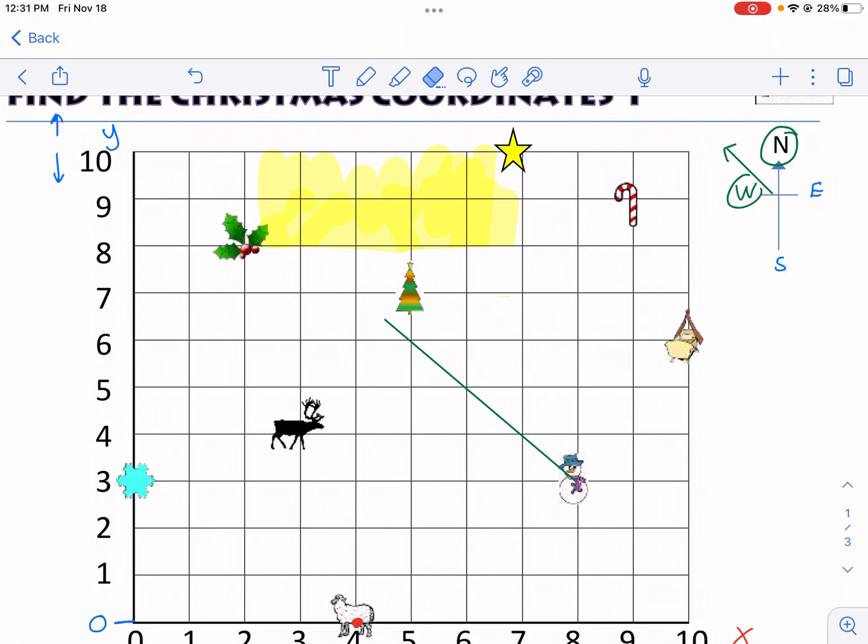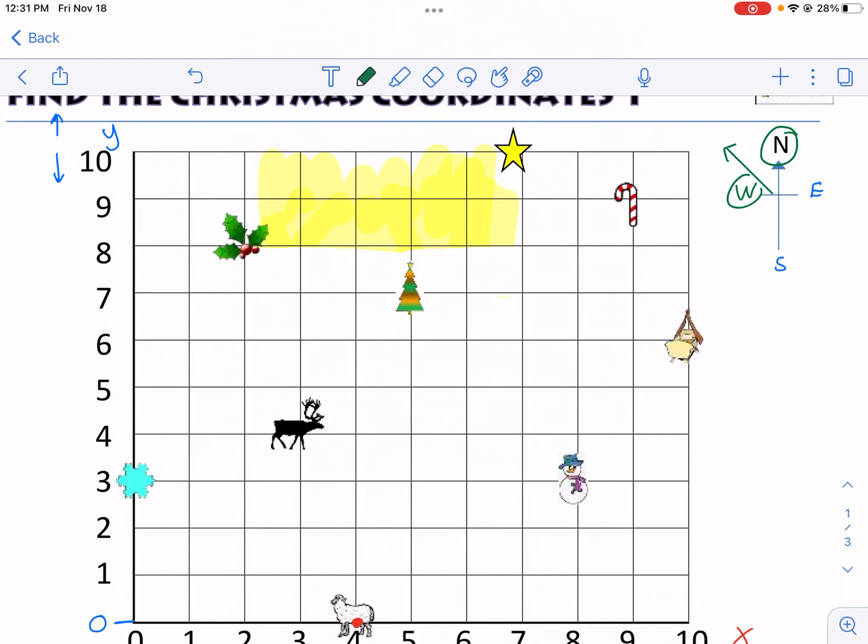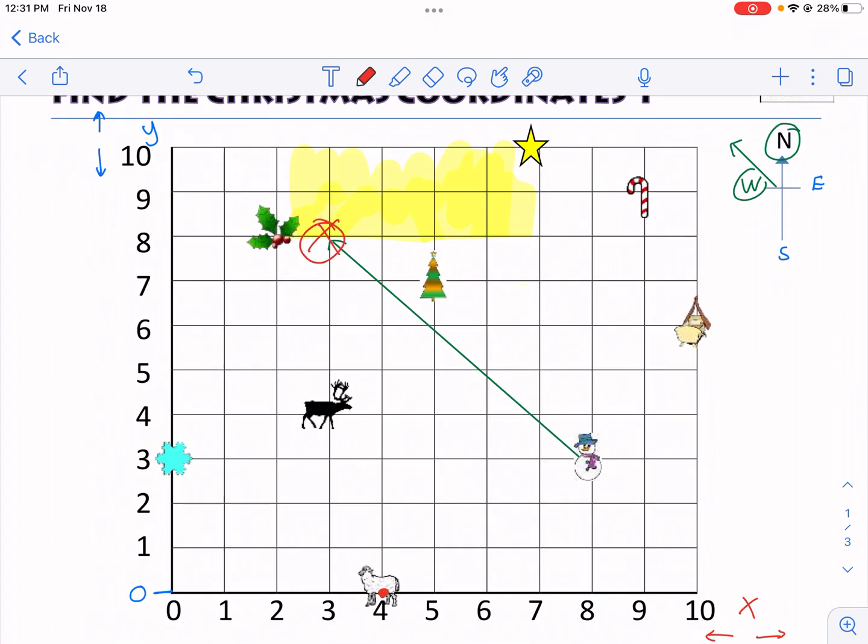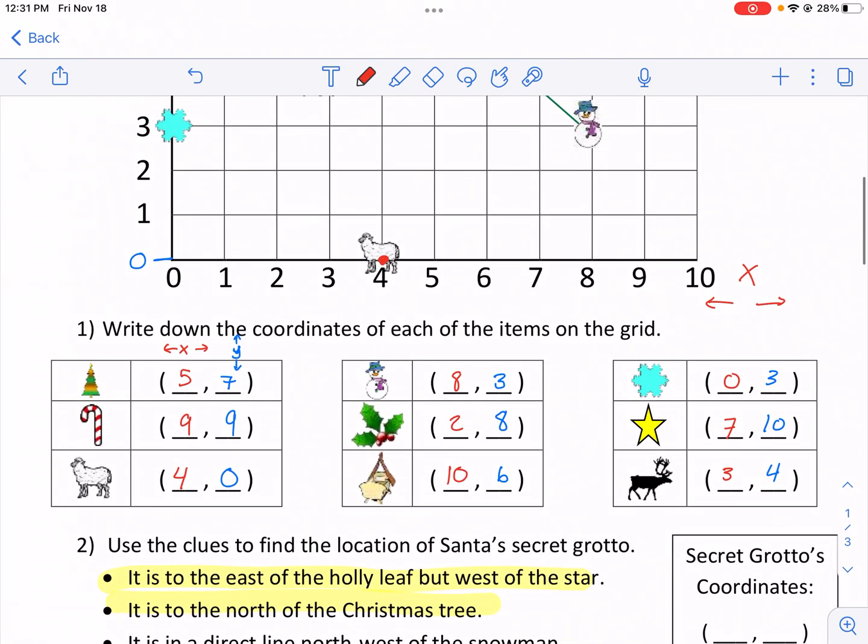And then I'm going to extend this line out. I'm going to make it even longer. Let me erase the whole thing. And then I'm going to extend it from the snowman. And it looks like I got the spot right here. This is the spot, direct line. And that is where Santa's Grotto is.